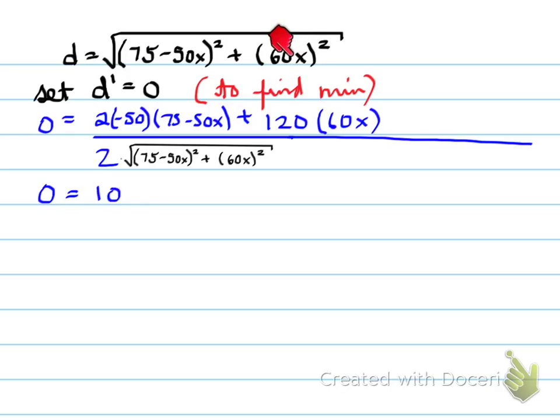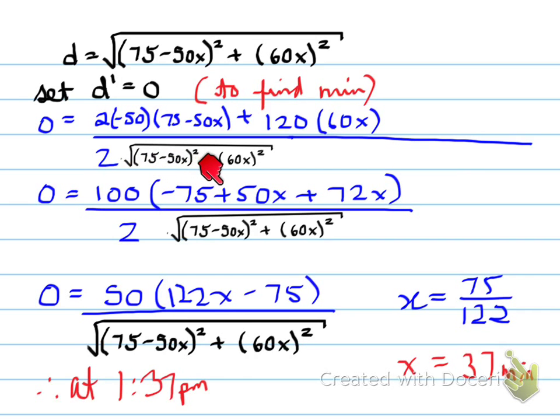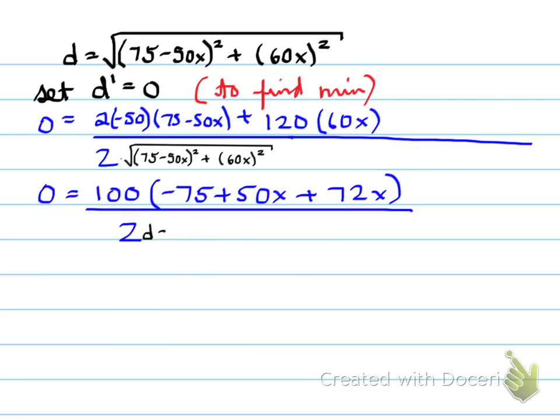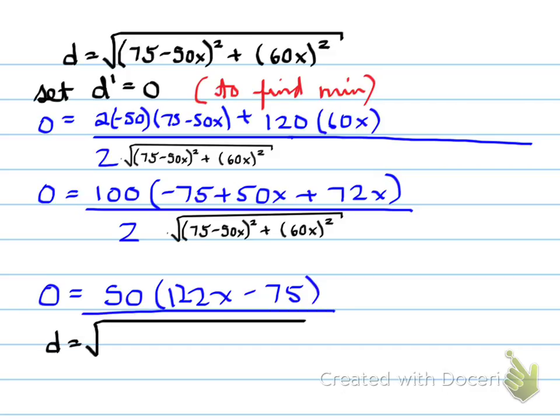Once you do that, you then expand it, collect like terms, common factors. So what I did here is, looking up here at the top, I can divide out 100. From here, I can divide out 100 here, and I can divide out 100 here. That will give us 100 times negative 75 plus 50x plus 72x all over the bottom.